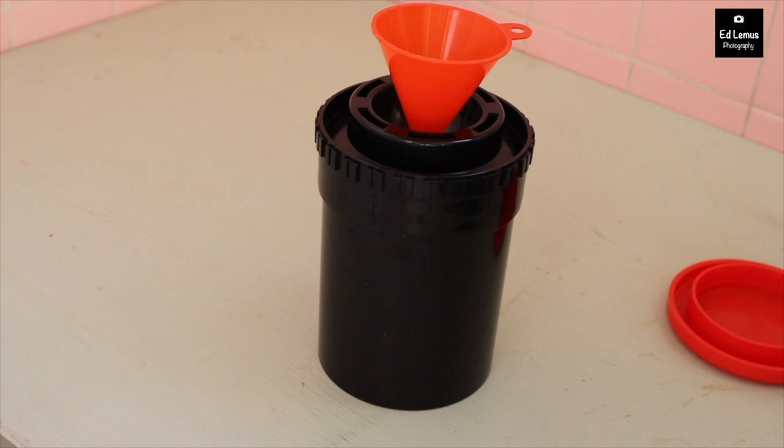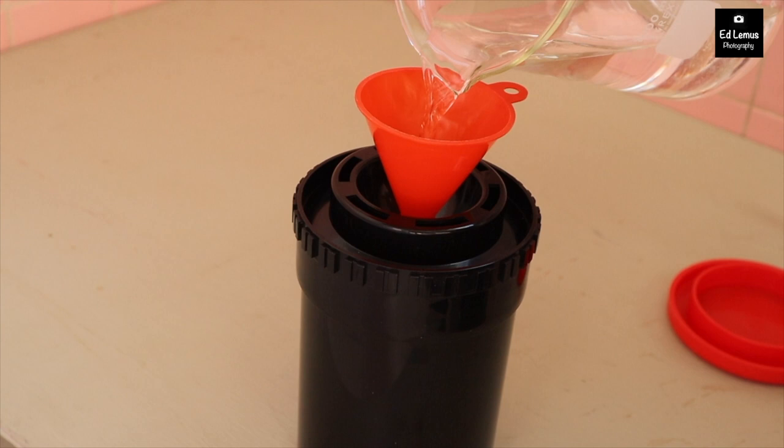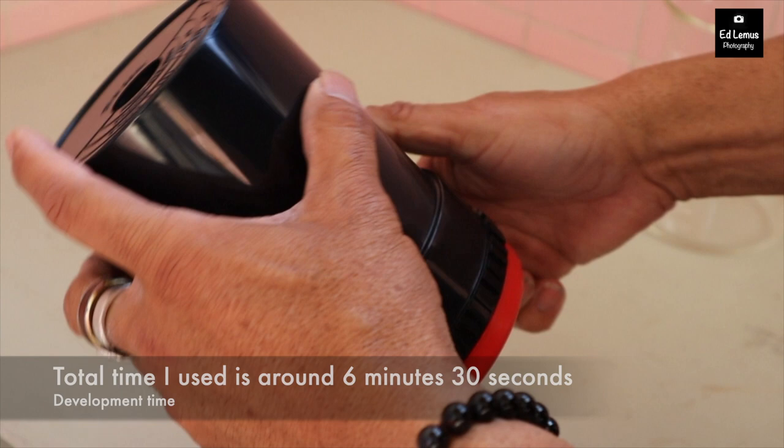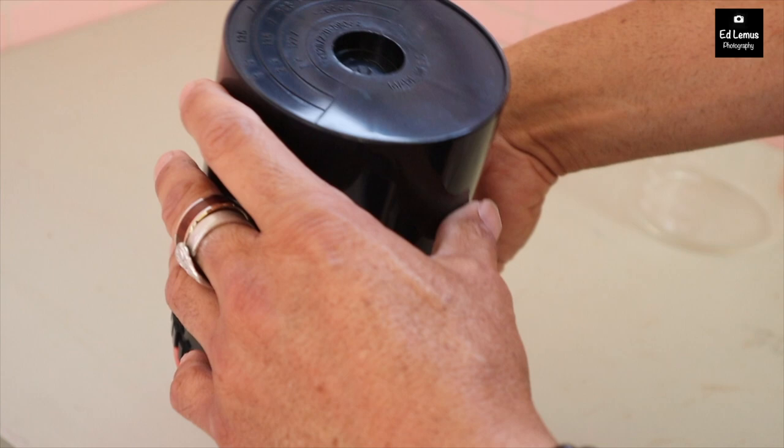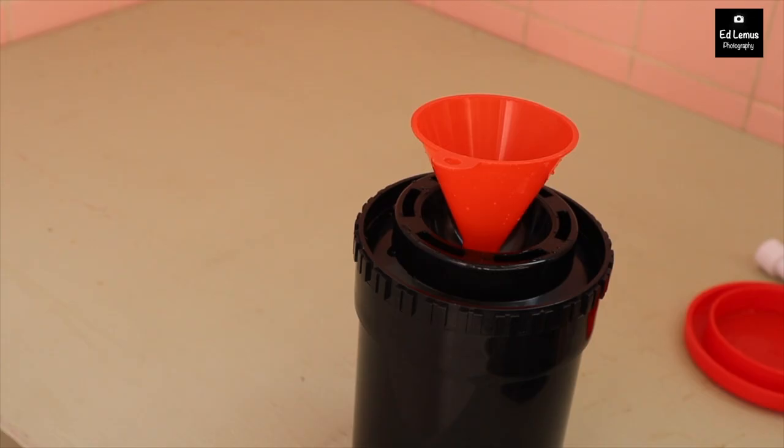We first start by filling our development tank with D76 developer. This is how you agitate the tank: for 1 minute the first time, and then after that every 30 seconds. Then tap it on a counter to make sure the bubbles do not stay.